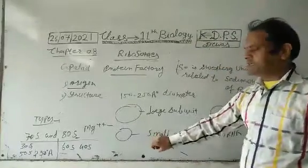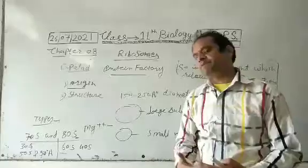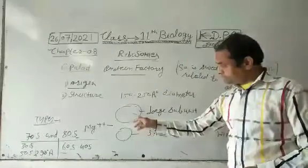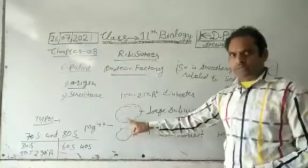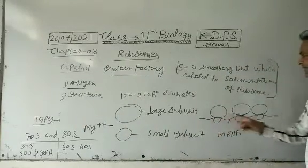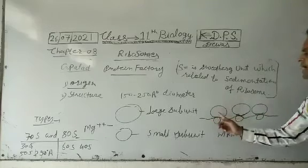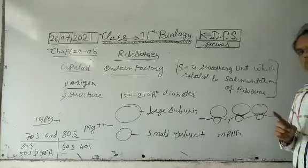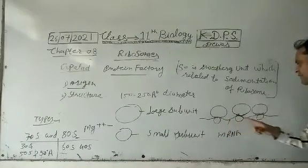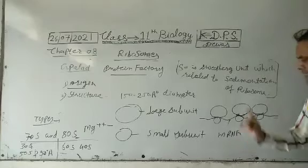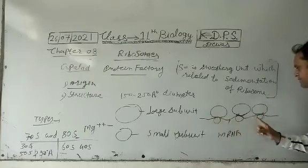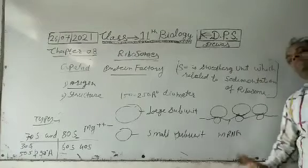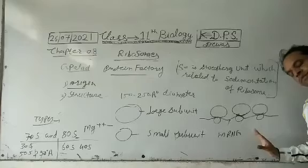The large subunit and small subunit are attached to each other on the mRNA. At one time, 6 to 8 ribosomes can attach to a single mRNA — this structure is called poly-ribosomes.